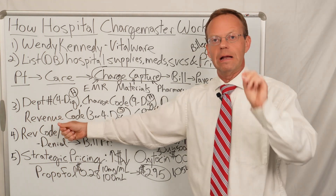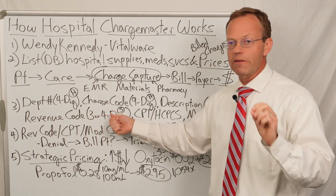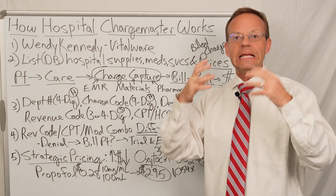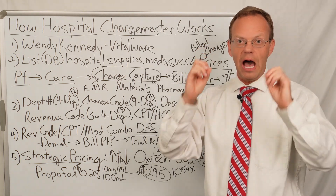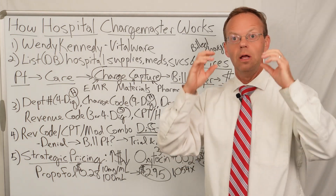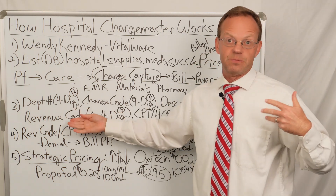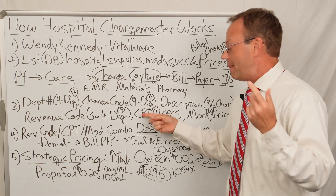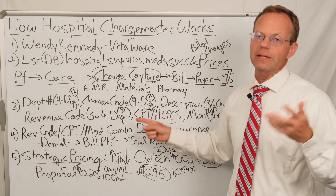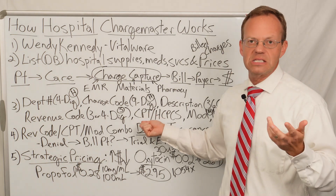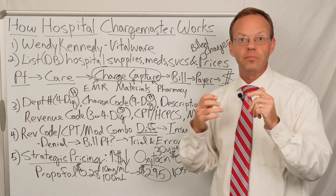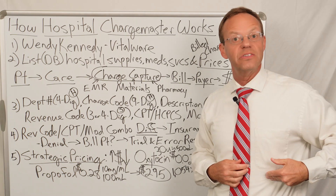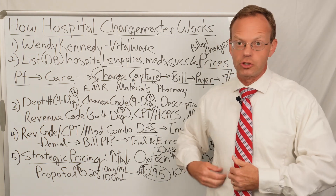Next you have a revenue code — a three or four-digit code that is the standardized, rolled-up code. For example, there's a revenue code for a level-five ER visit, the highest-intensity, most complex ER visit. The American Hospital Association is the organization that creates all revenue codes, which are standardized across all hospitals. Then you have the CPT or HCPCS code — the actual procedure code. For example, a CPT code for a chest X-ray, or for an outpatient surgery like a laparoscopic cholecystectomy — surgical removal of the gallbladder.